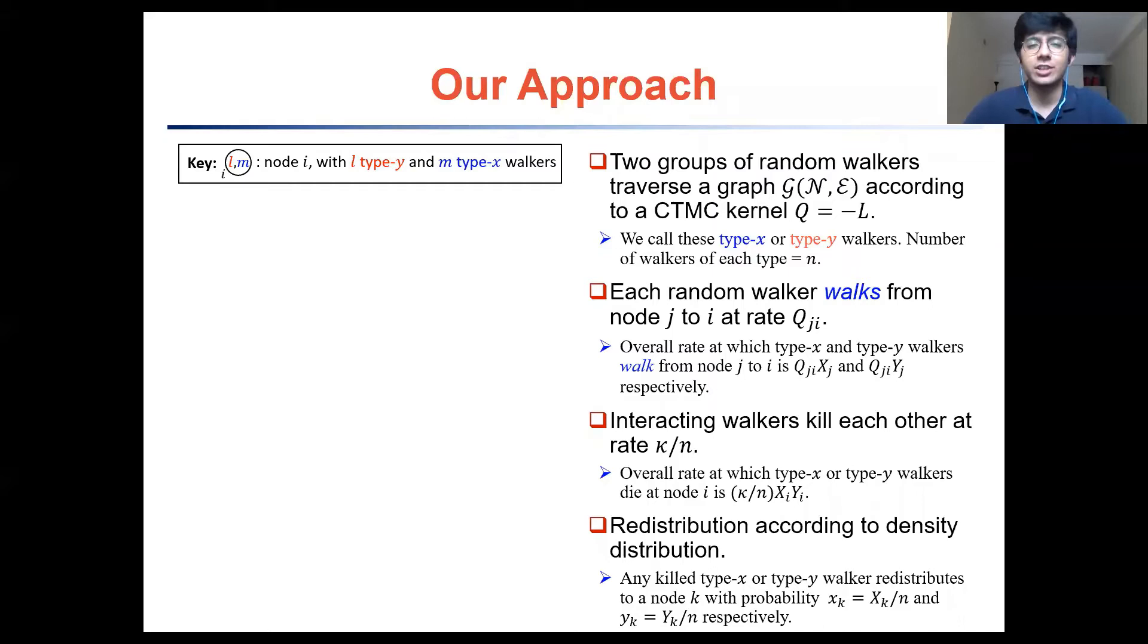We now go on and describe our stochastic process. Consider two different groups of n random walkers each. We call this group X or group Y, which have type X or type Y walkers given by blue and red colors respectively. Each of these walkers walks on the graph according to a continuous time Markov chain given by Q equals minus L.